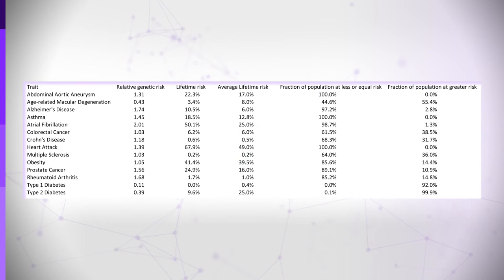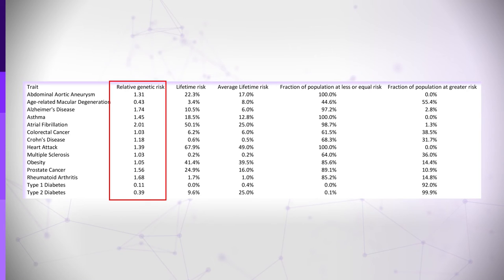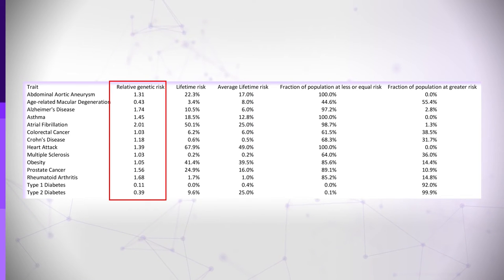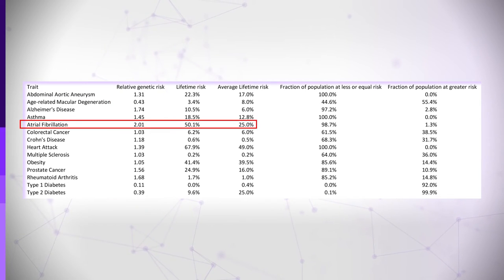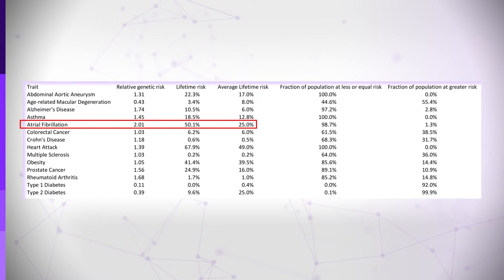The next figure shows the type of data which results from the statistical analysis for one individual. The first column shows the relative lifetime risk of the individual having the disease phenotype compared with the reference population. In this case, the highest relative risk of 2.01 — just over two-fold — is for atrial fibrillation, increasing the risk from 25 to 50%.